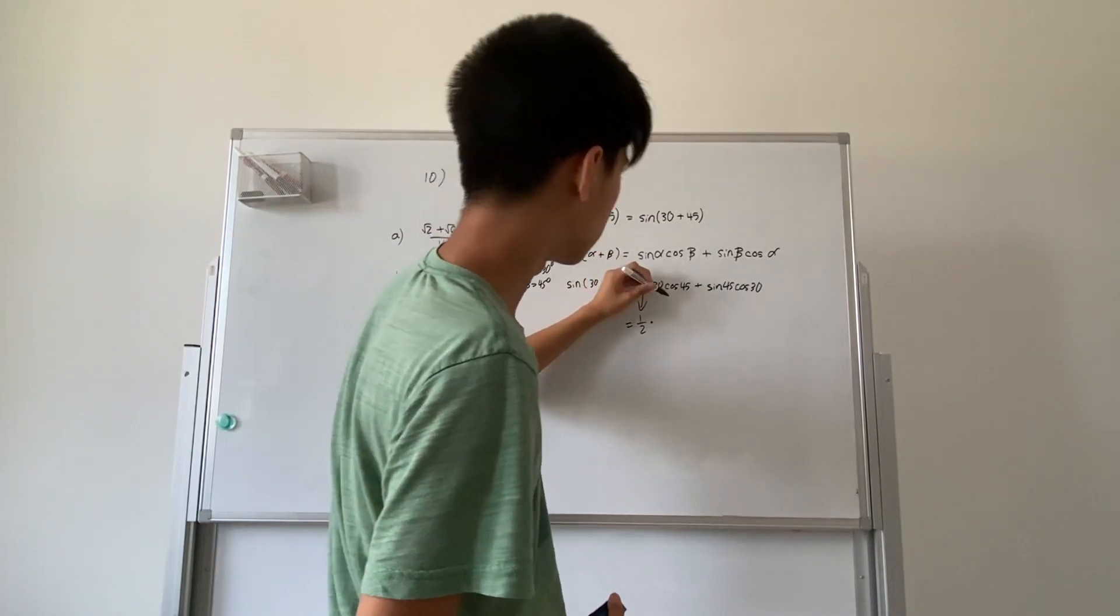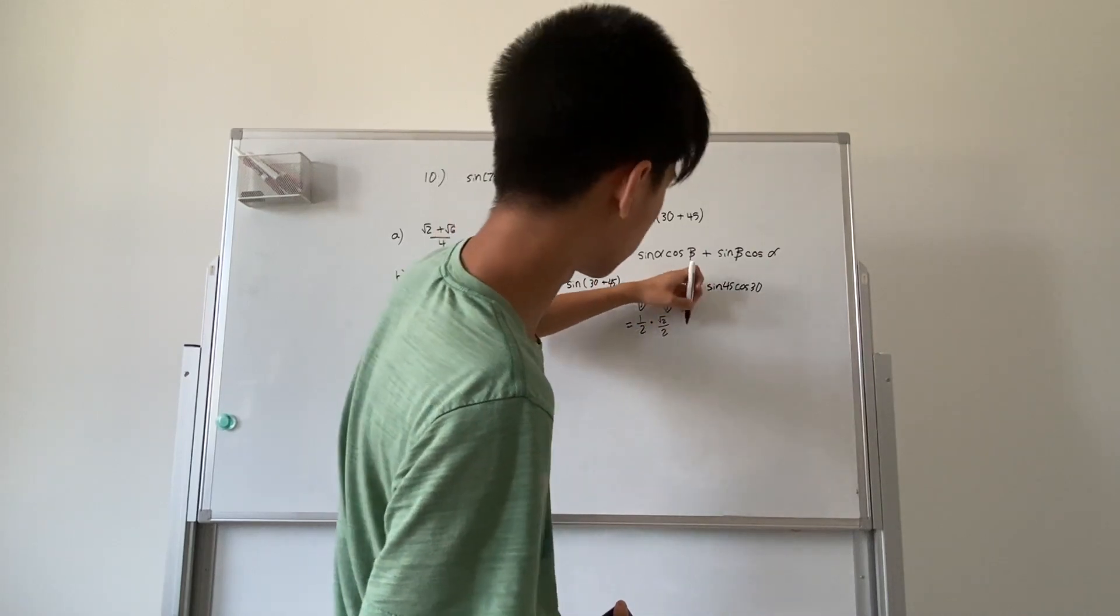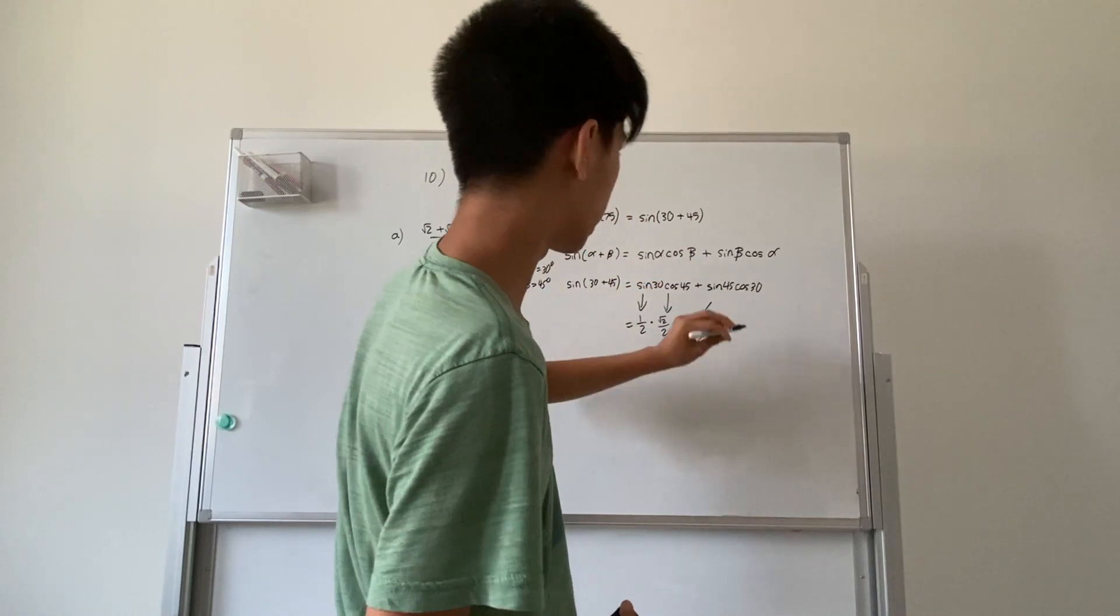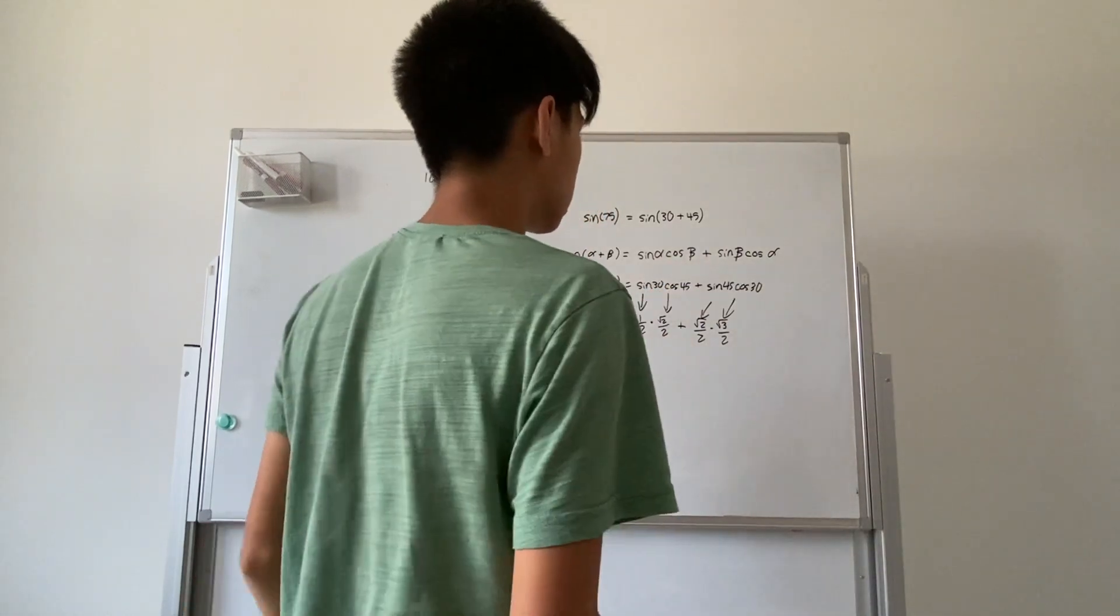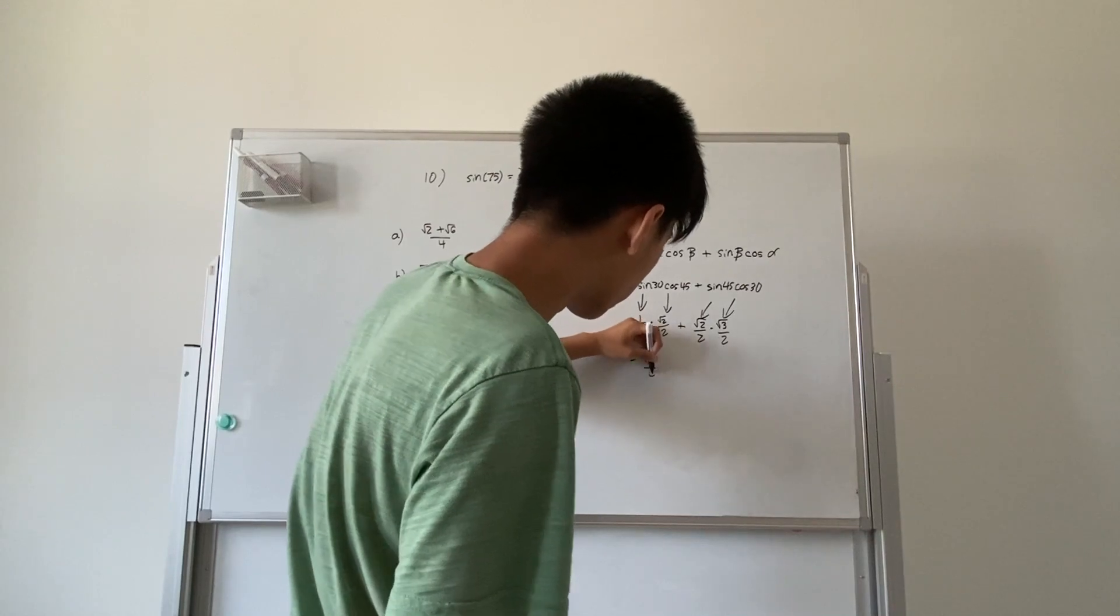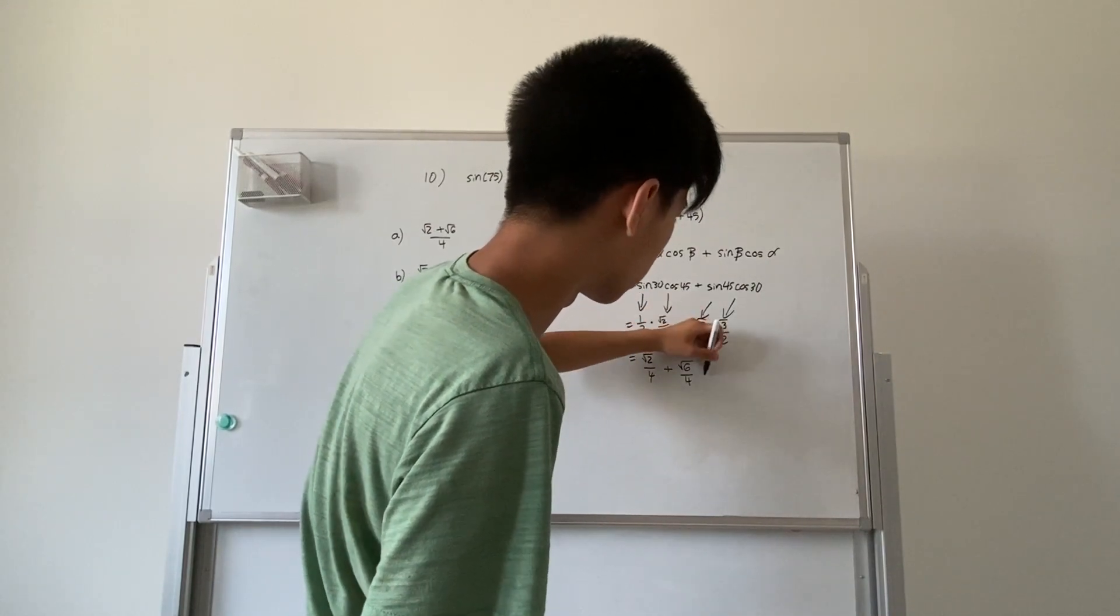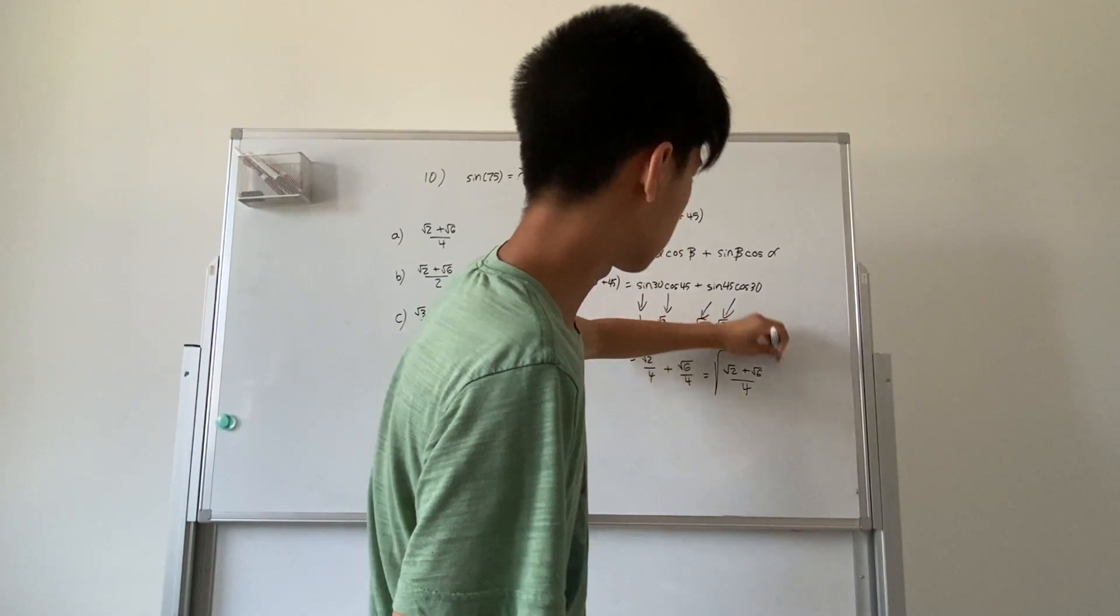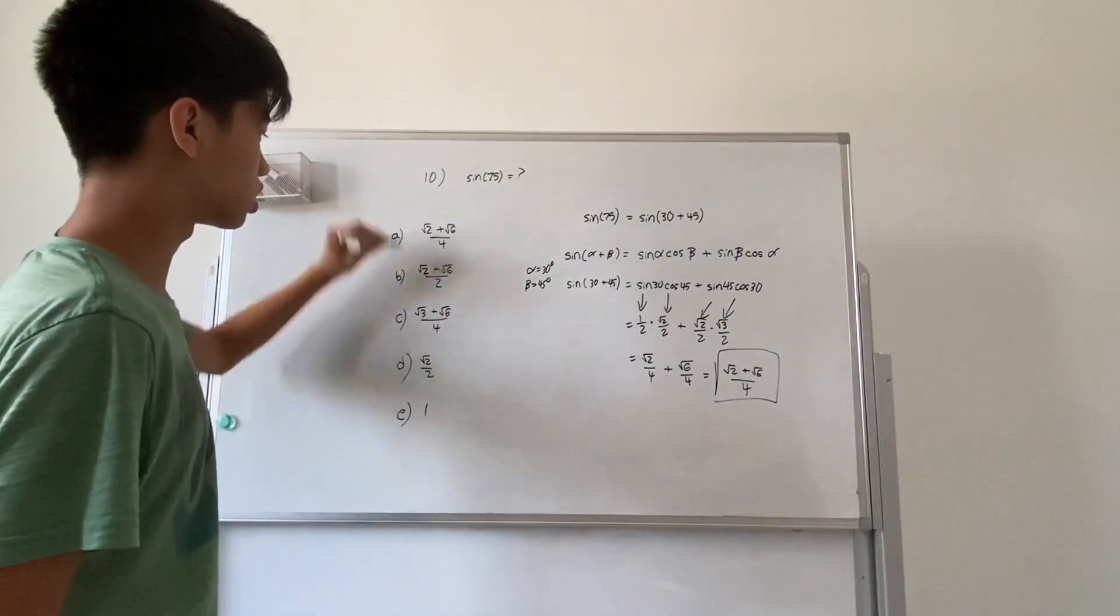Which equals sine of 30 times square root of 2 over 2 from our cosine of 45, plus square root of 2 over 4 plus square root of 6 over 4, or square root of 2 plus square root of 6 over 4. That's our answer in terms of radical, and that does indeed match up with one of these options.